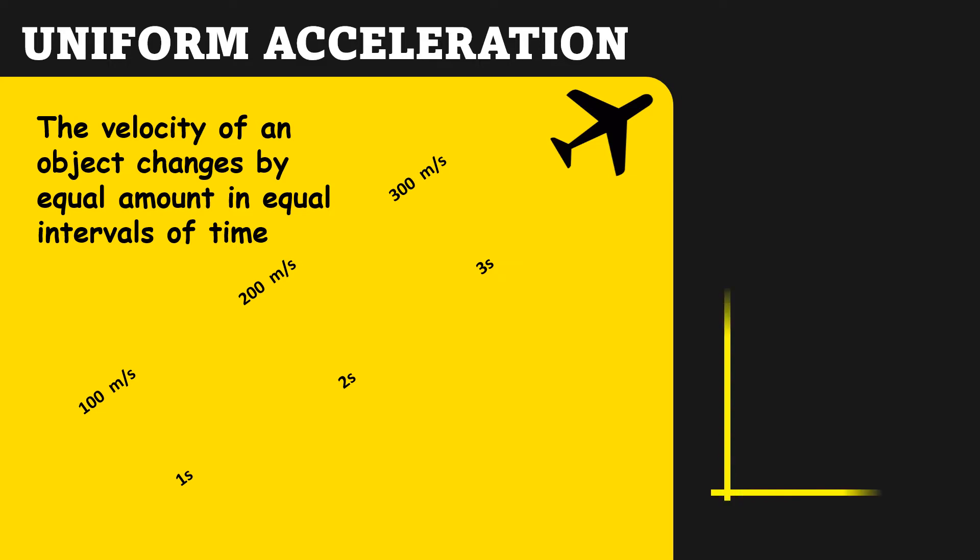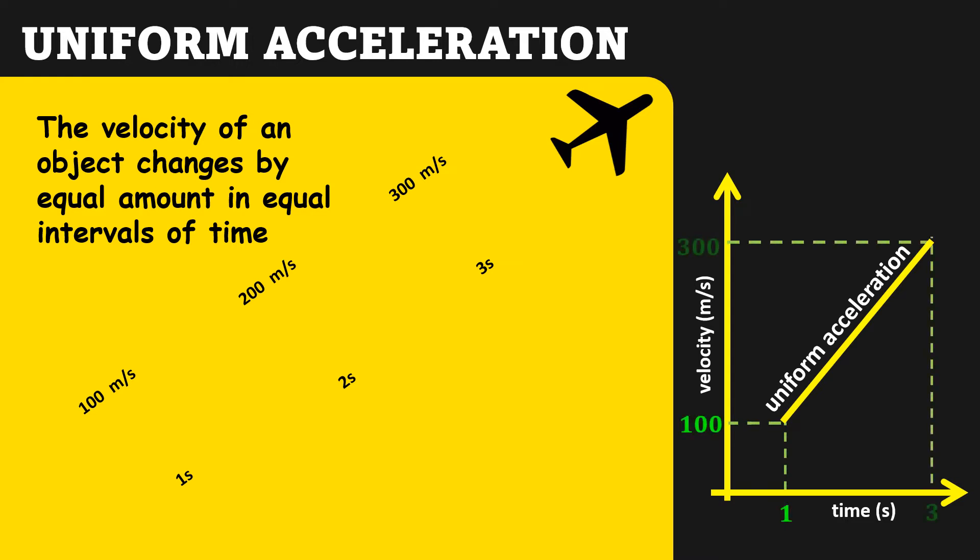We can show this with the help of a graph as well, where we will get a straight line. We can find the value of acceleration in this graph by taking out the slope.